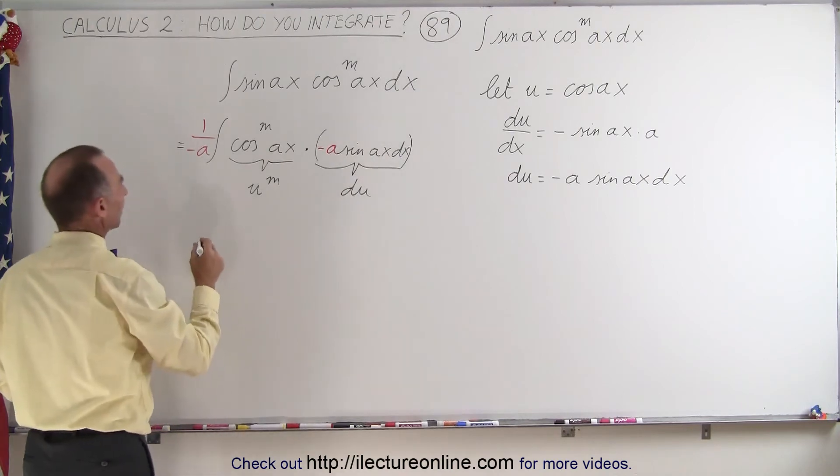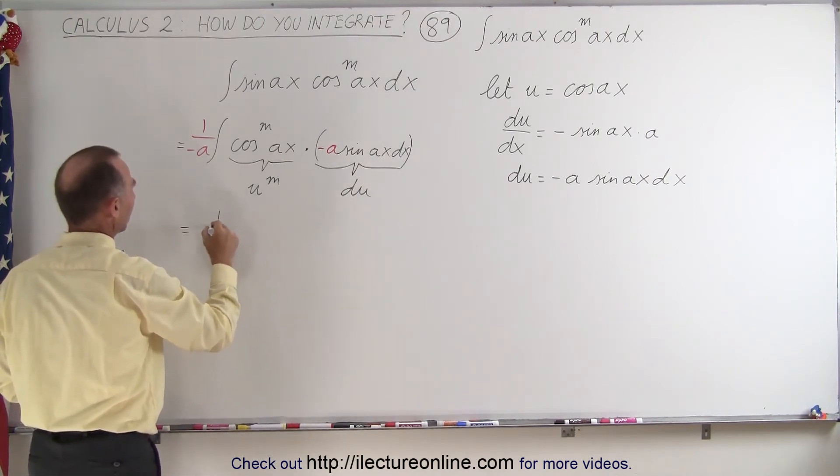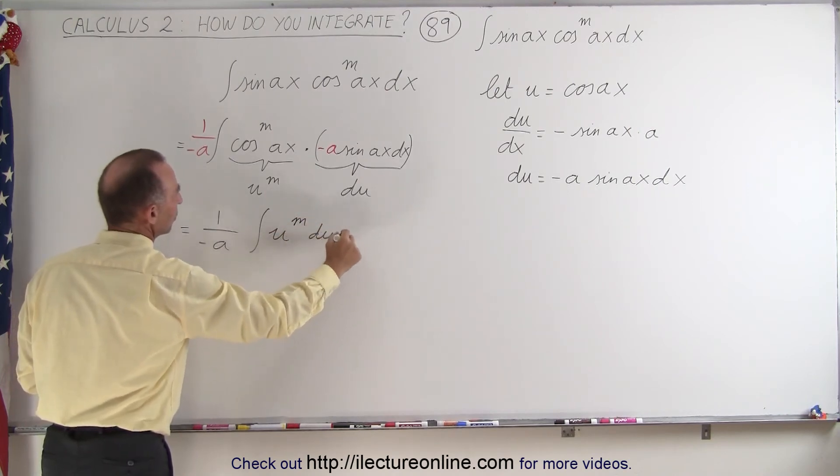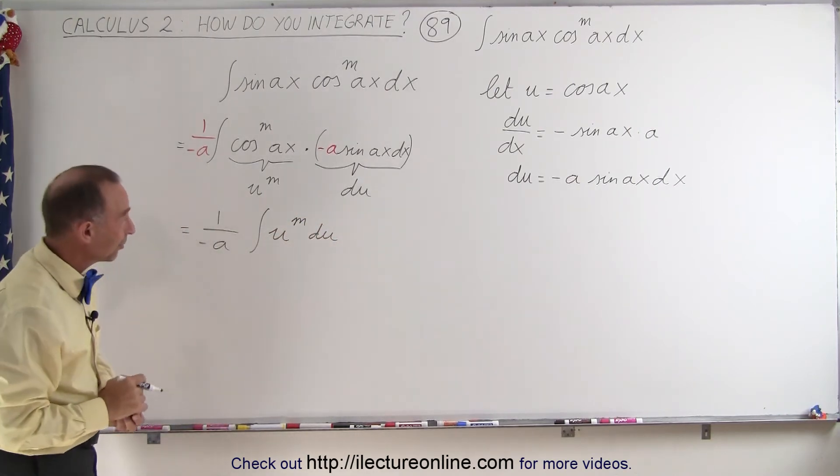So this integral now becomes as follows: this is equal to 1 over minus a, times the integral of u to the m power du, and of course that is relatively easy to integrate.